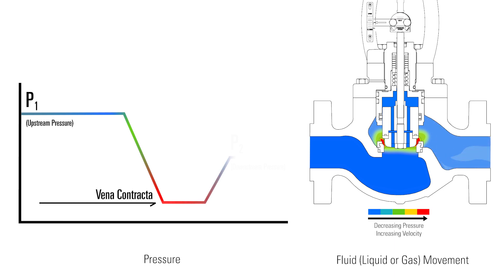Then the pressure recovers back up to a point that is somewhere between the vena contracta pressure and P1. This is downstream pressure, or P2.